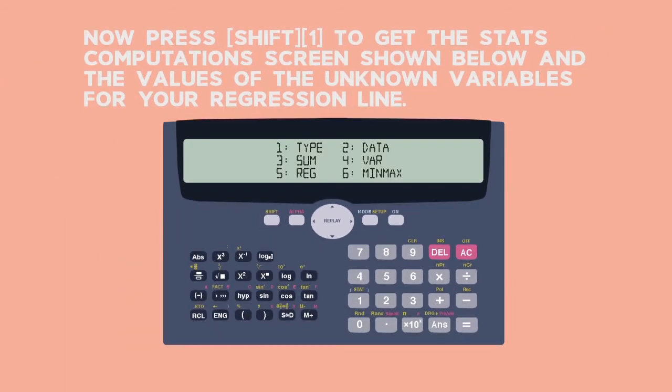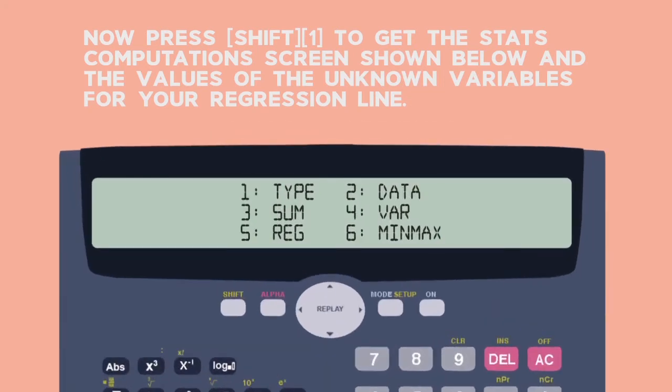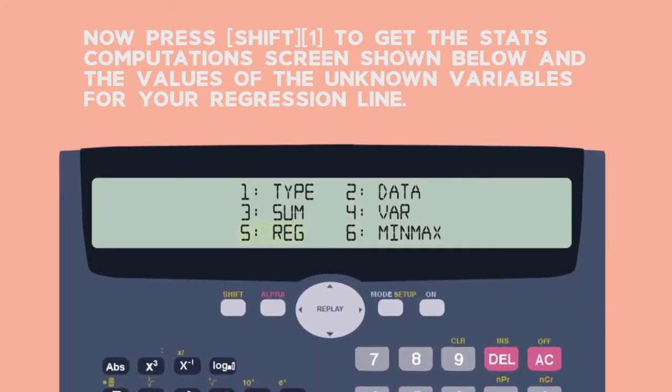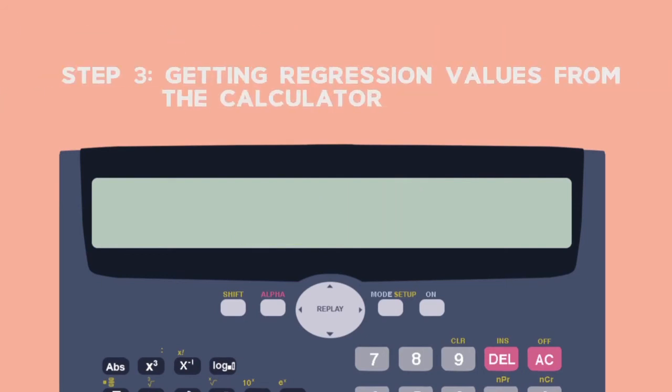Now press Shift 1 to get the Stats Computations screen shown and the values of the unknown variables for your regression line. Choose Regression by selecting 5, the option that shows the first three letters of the word regression.